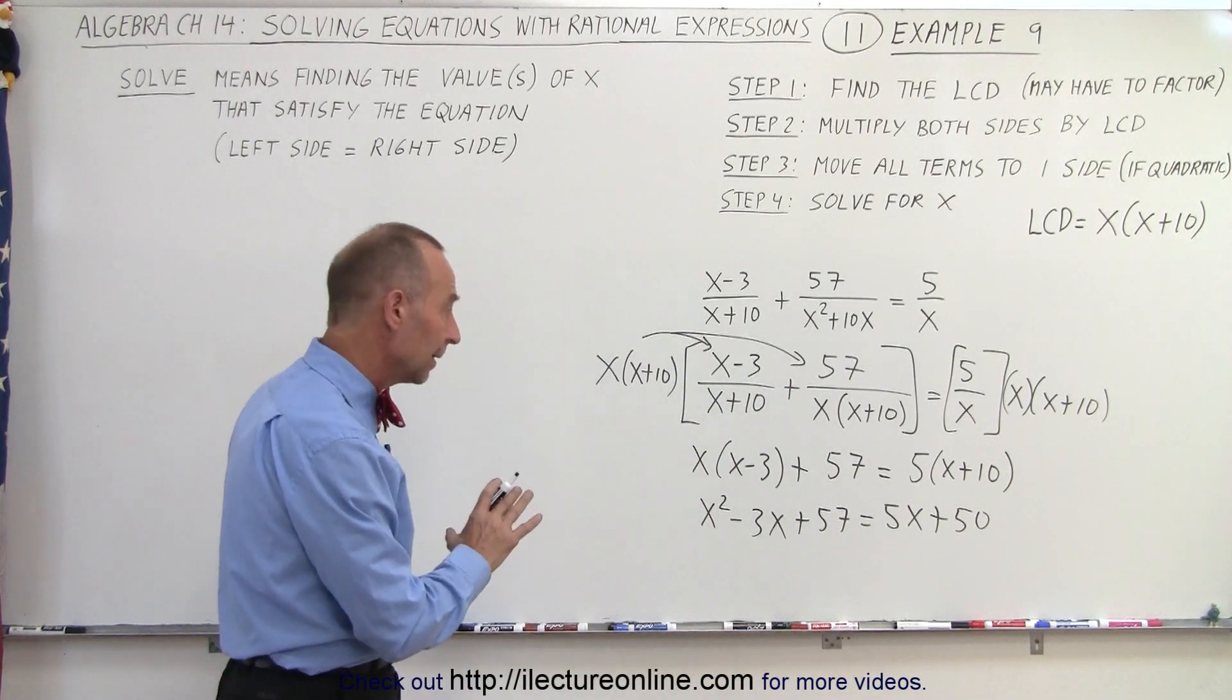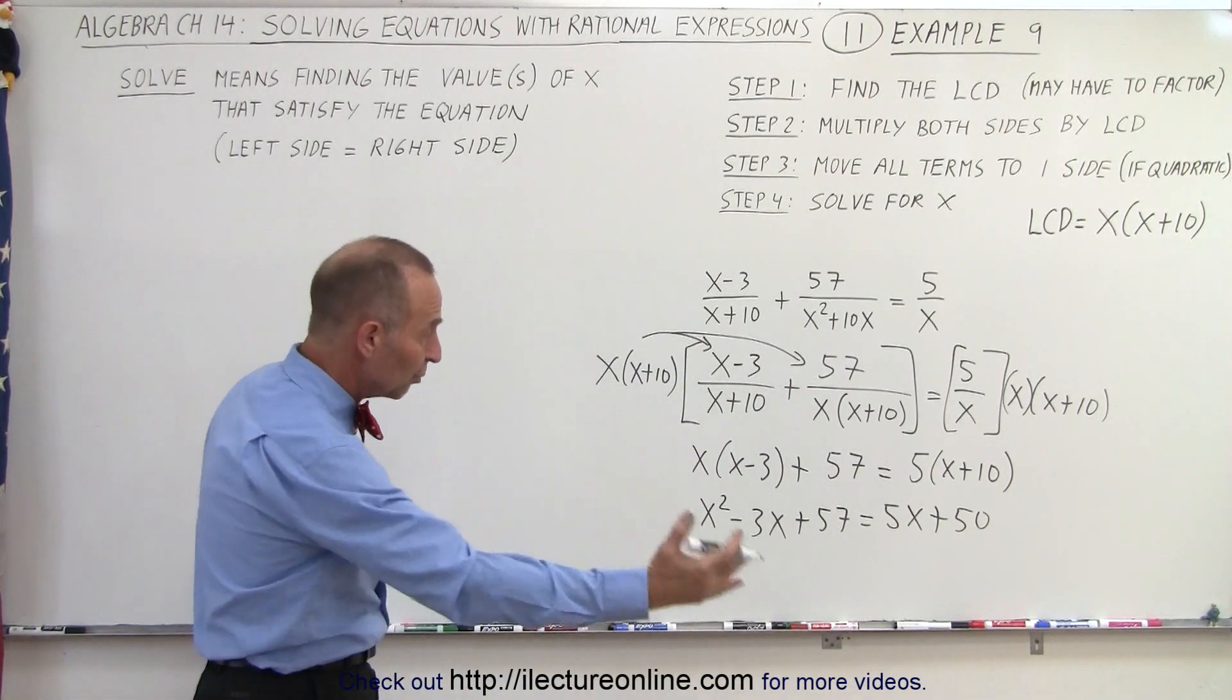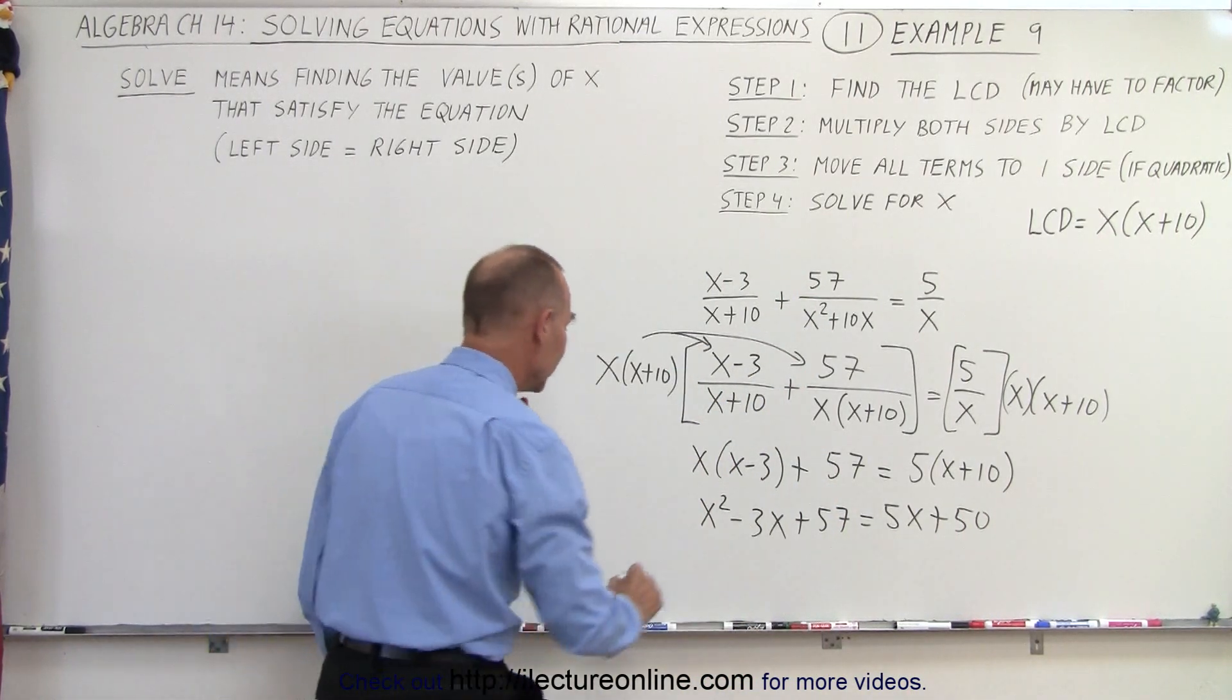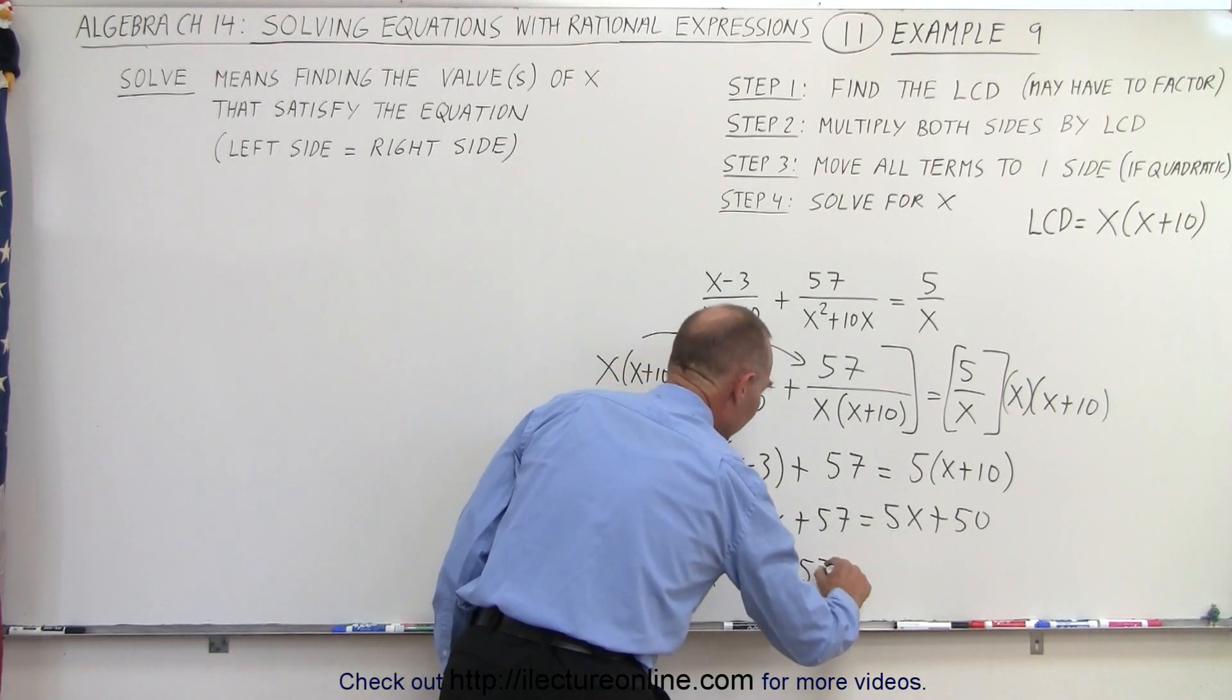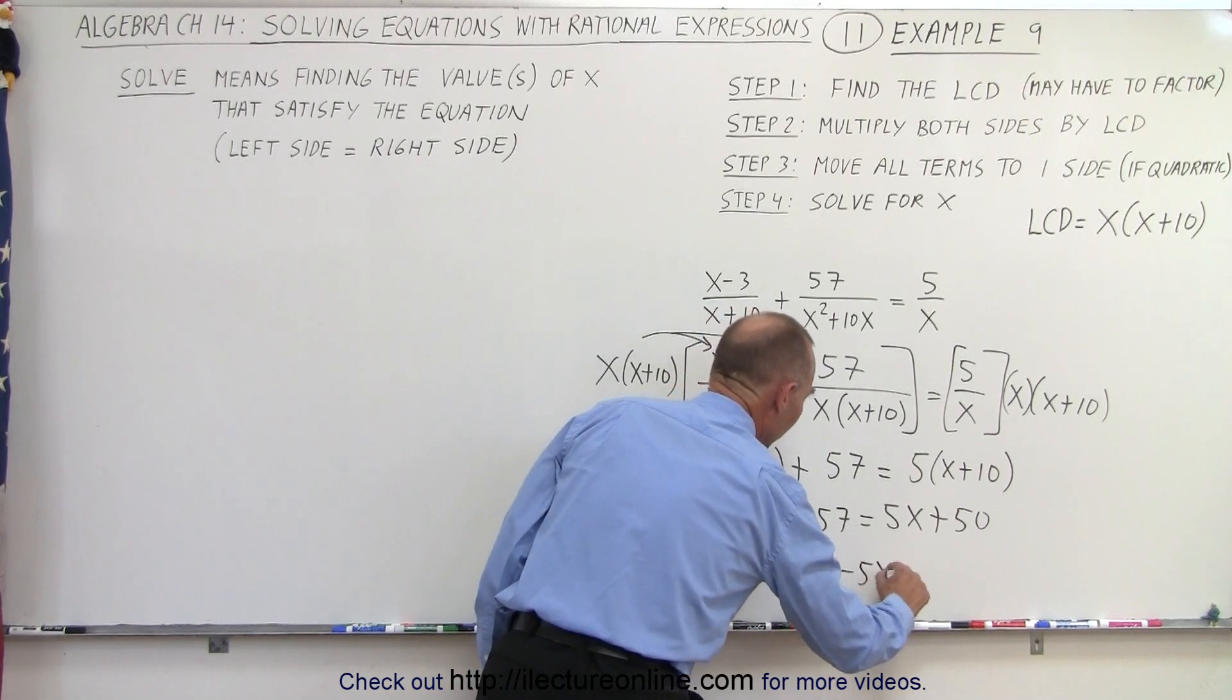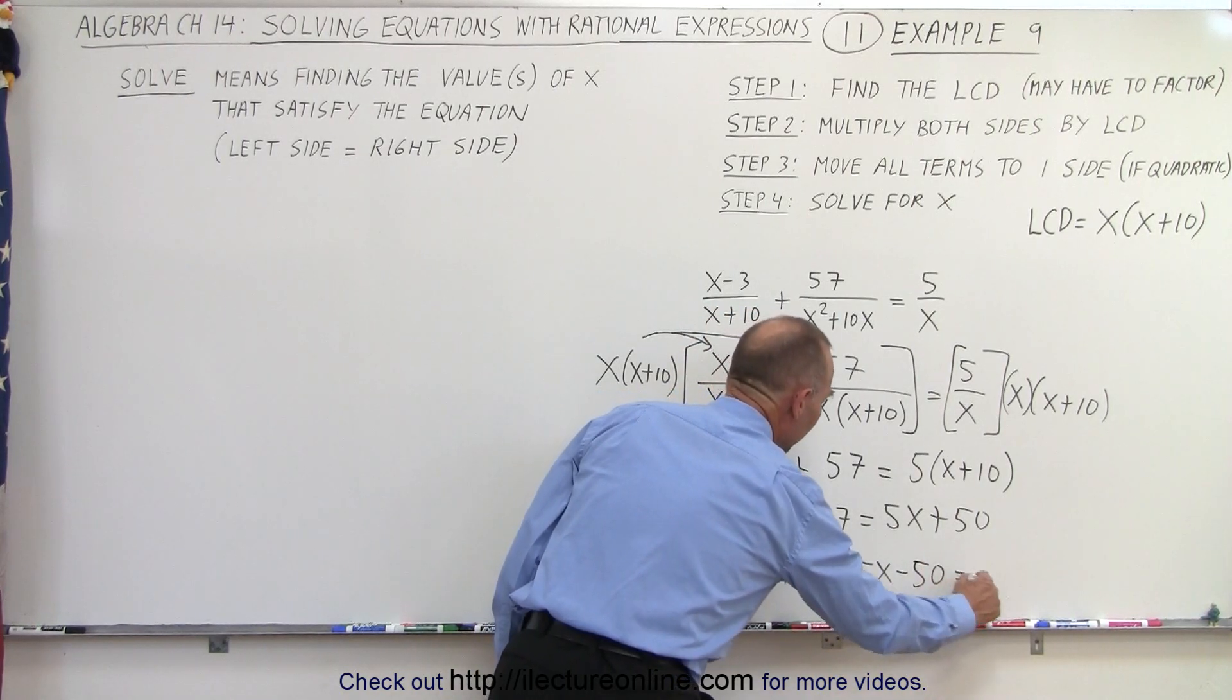Now notice that it's a quadratic equation, which means we want to move all the terms over to one side. x squared minus 3x plus 57 minus 5x minus 50 equal to 0.